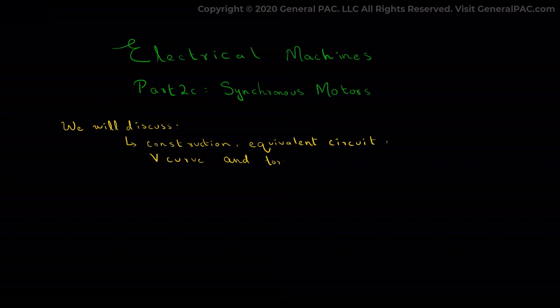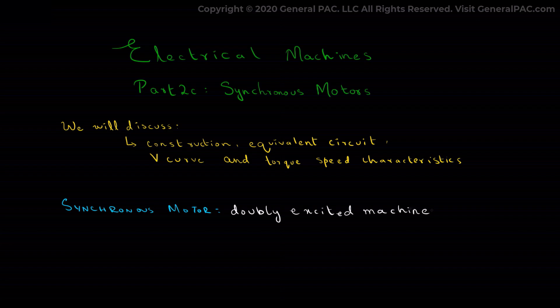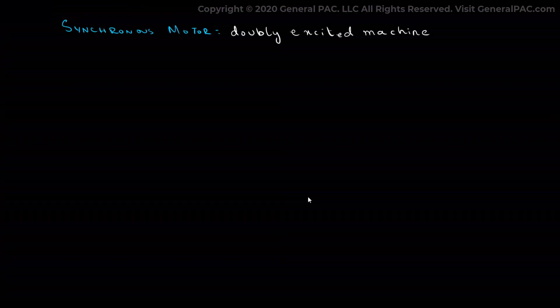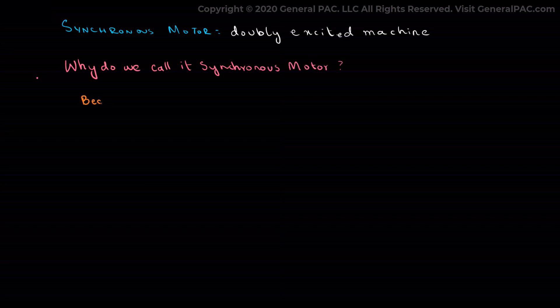The synchronous motor is a synchronous machine that converts electric power to mechanical power with the distinction that this is a doubly excited machine, as opposed to an induction motor. We can call it a synchronous motor because the speed of the motor is the same as the rotating magnetic field.